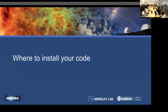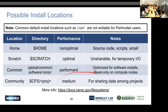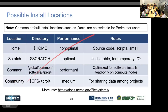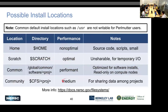Once you've compiled your code, where do you put it? Your home directory is not optimal for performance. If you really want your code to run as fast as possible, scratch is a really good place. If your code is too big for scratch, then look at global common. If you're doing software for your entire project, global common is also a good place to install so everybody in your project can use it.